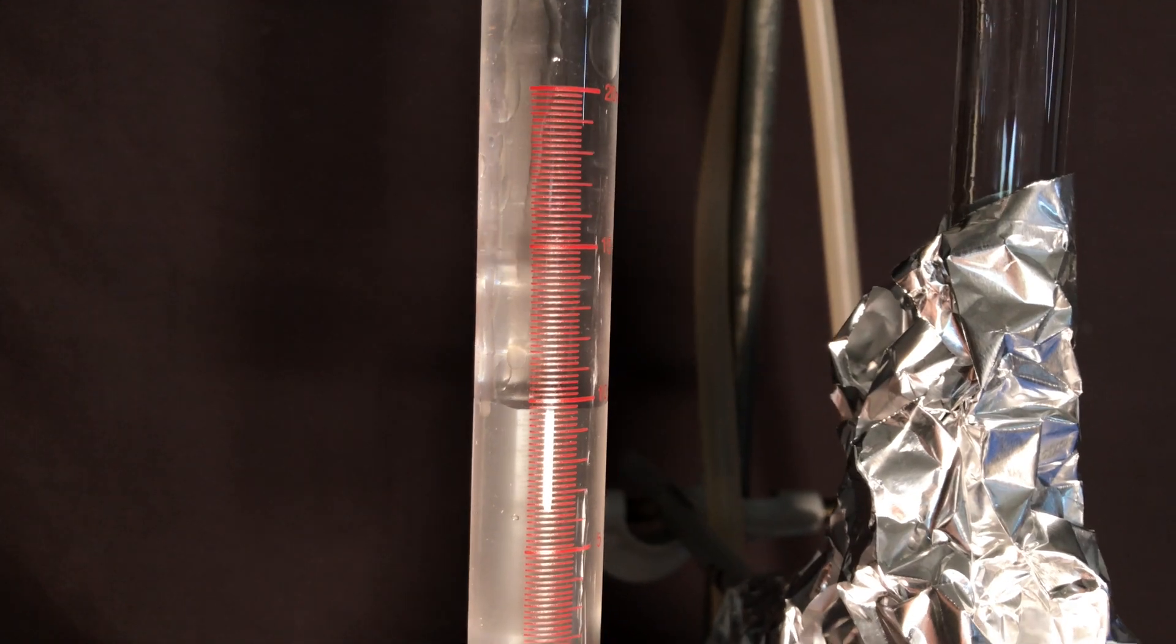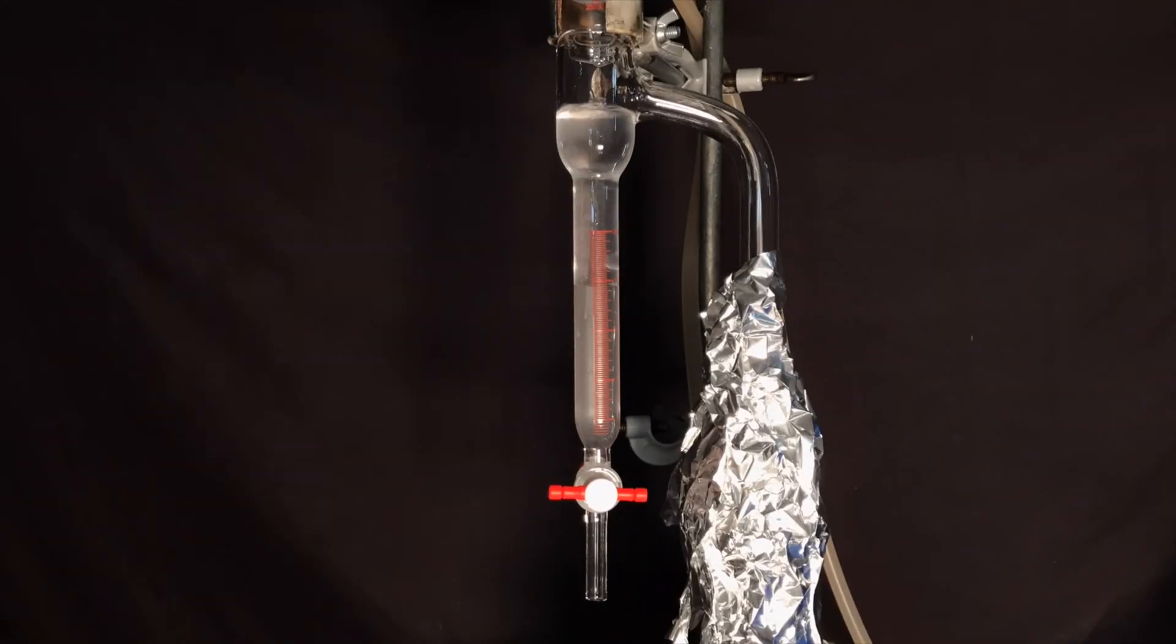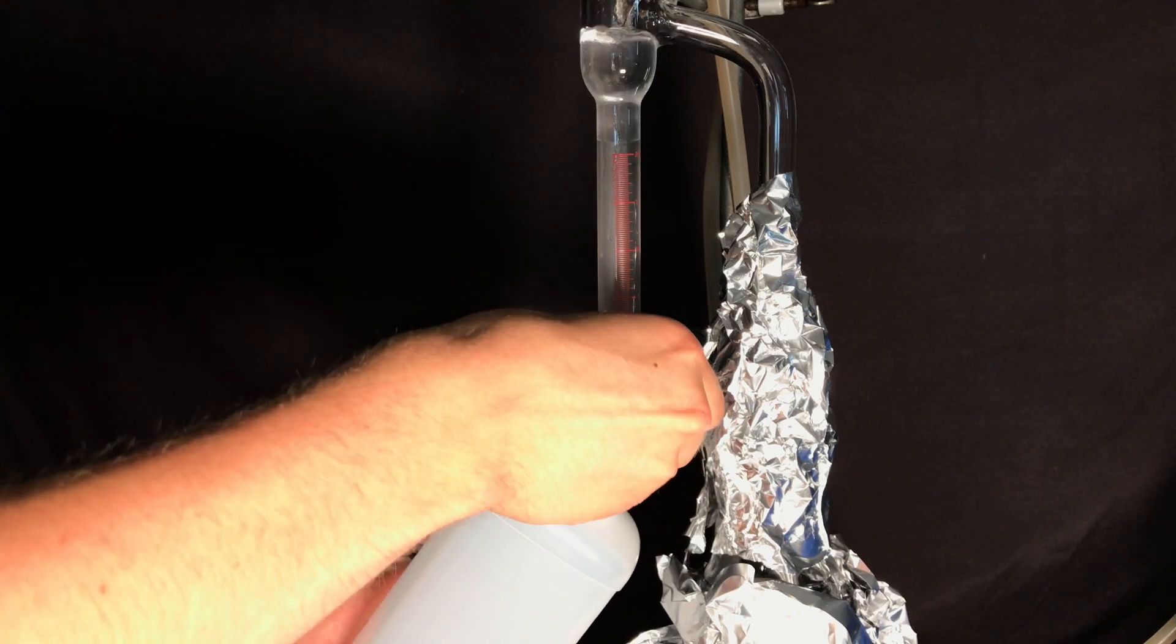Up at the condenser you can see the benzene and water azeotrope condensing and flowing down. The layer of water collects at the bottom and it should get thicker over time.